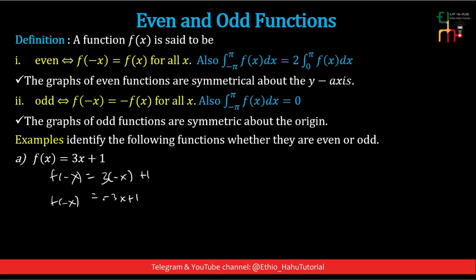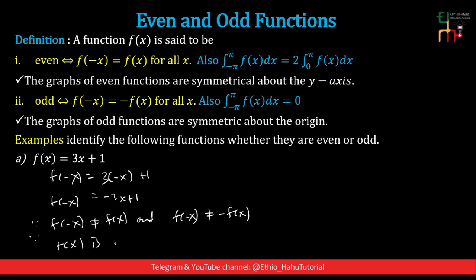So f(-x) = -3x + 1. Therefore f(-x) is not equal to f(x), and f(-x) is not equal to -f(x), because -f(x) would mean -3x - 1. Since f(-x) = -3x + 1, therefore f(x) = 3x + 1 is neither even nor odd.